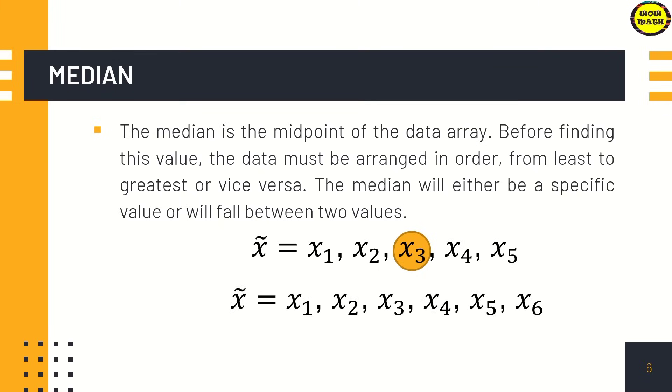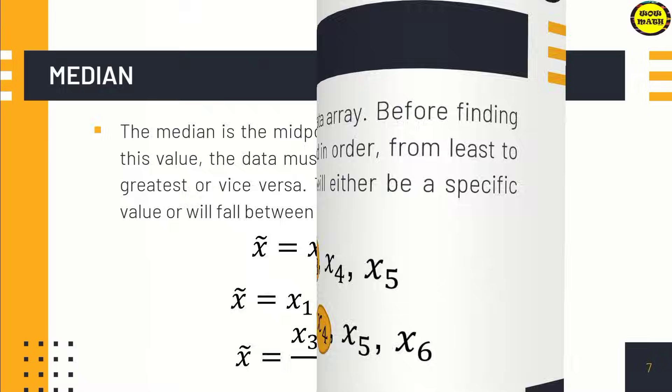But if you have even data, there are two middle values. When you have odd numbers of given data, there is only one middle value and that is your median. But when you have even numbers, you have two middle values. What do you do with the two middle values? Add them together and then divide by 2.